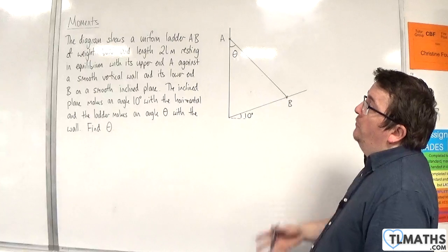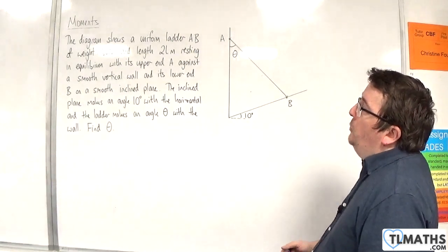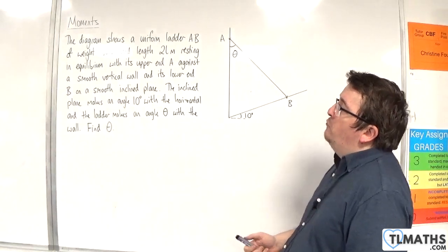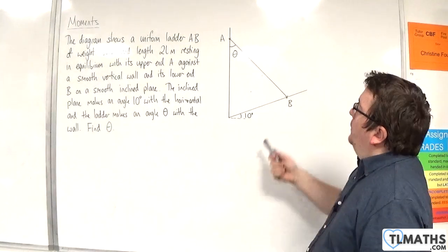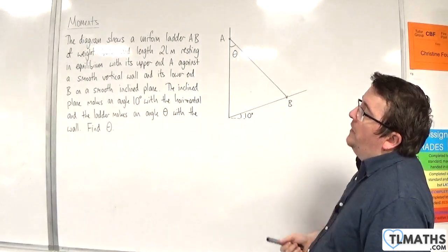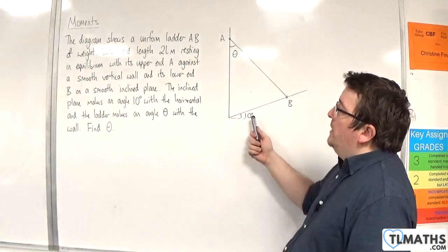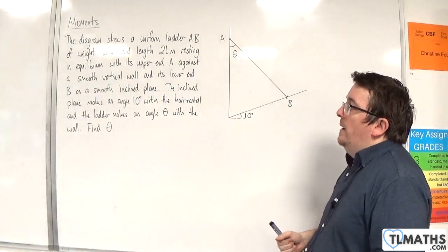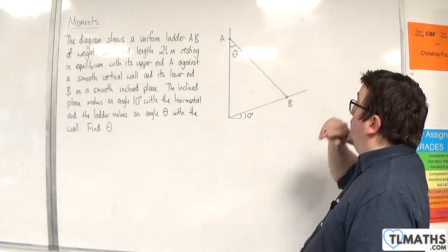In this video, we have a uniform ladder AB of weight W newtons and length 2L meters resting in equilibrium with its upper end A against a smooth vertical wall and its lower end B on a smooth inclined plane. The inclined plane makes an angle 10 degrees with the horizontal, and the ladder makes an angle theta with the wall. Find theta.